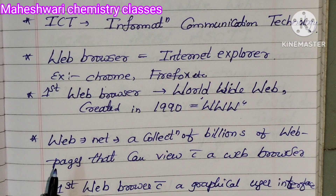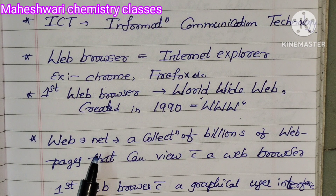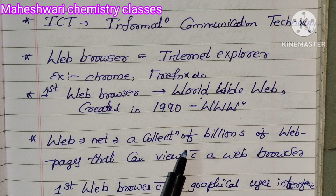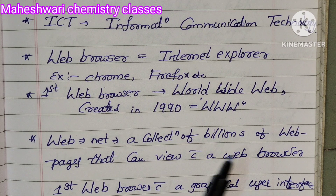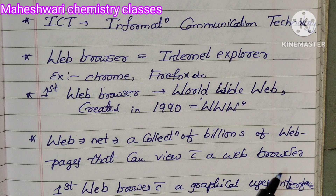Web meaning is Net. It is a collection of billions of web pages that can be viewed with a web browser.